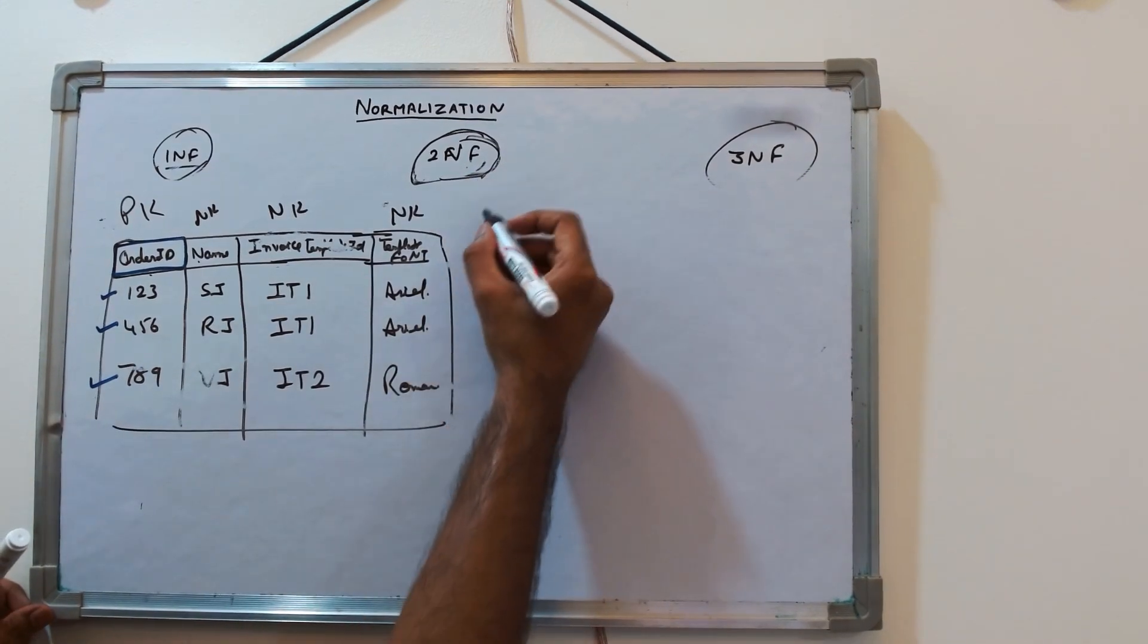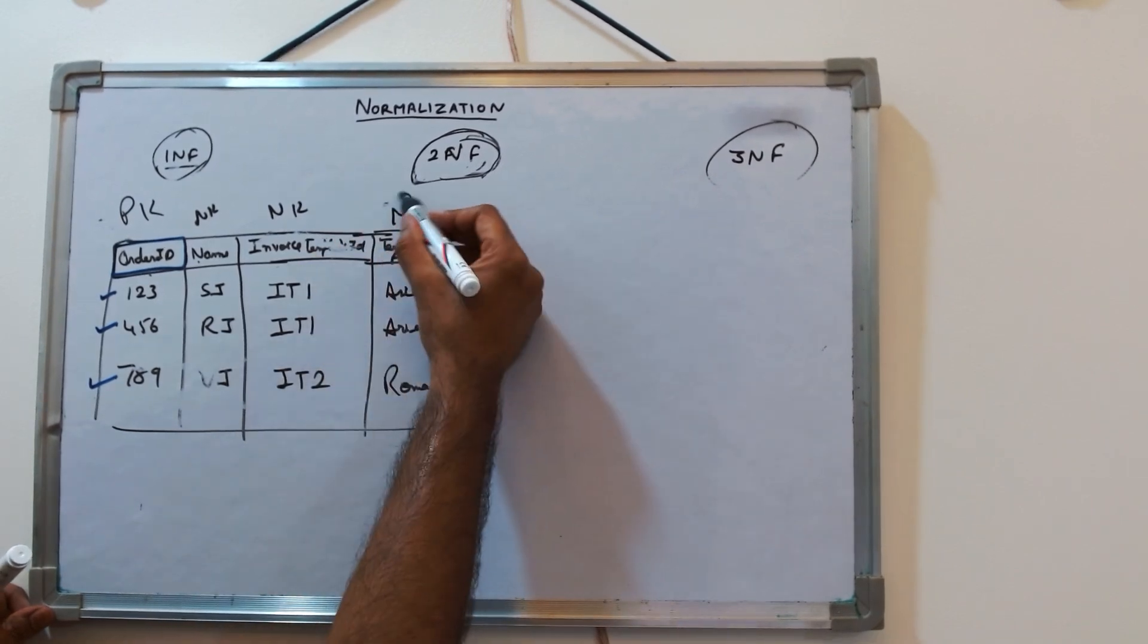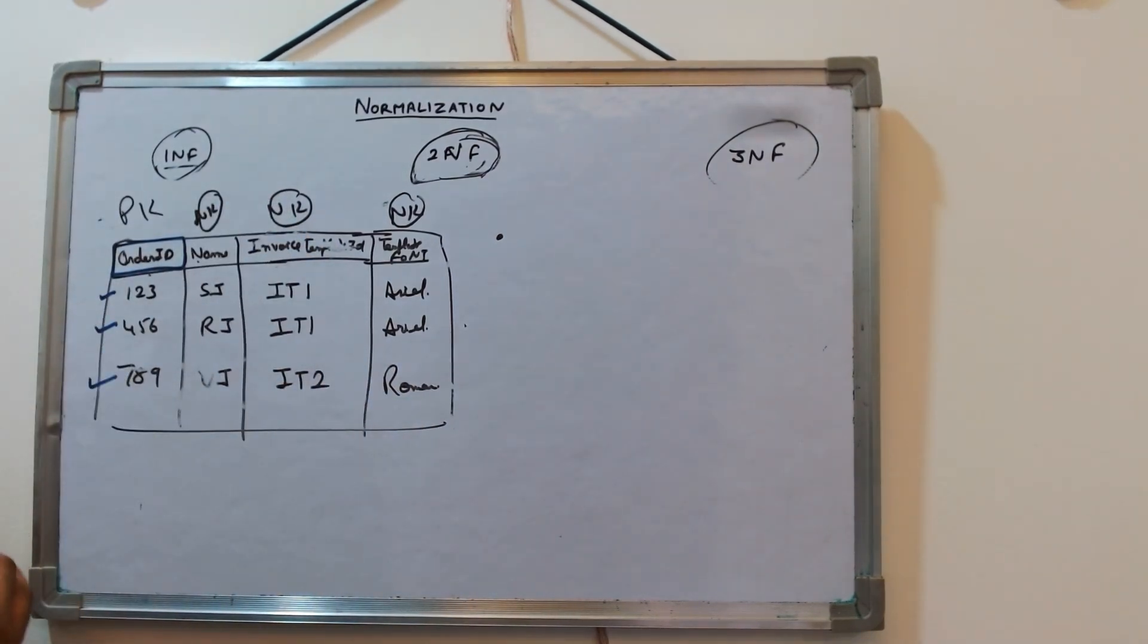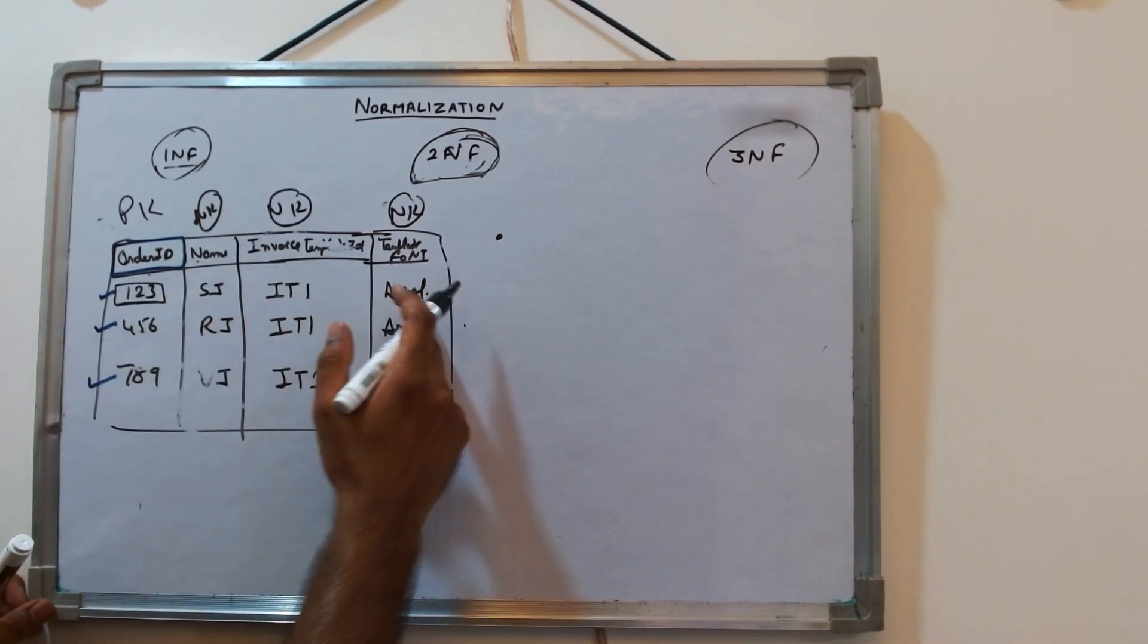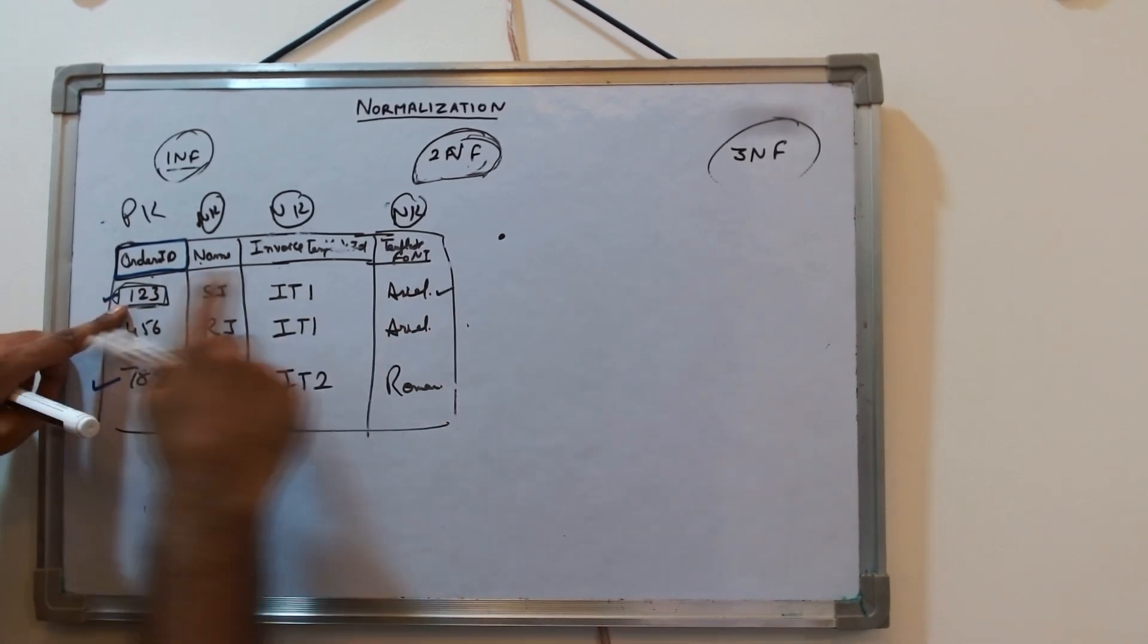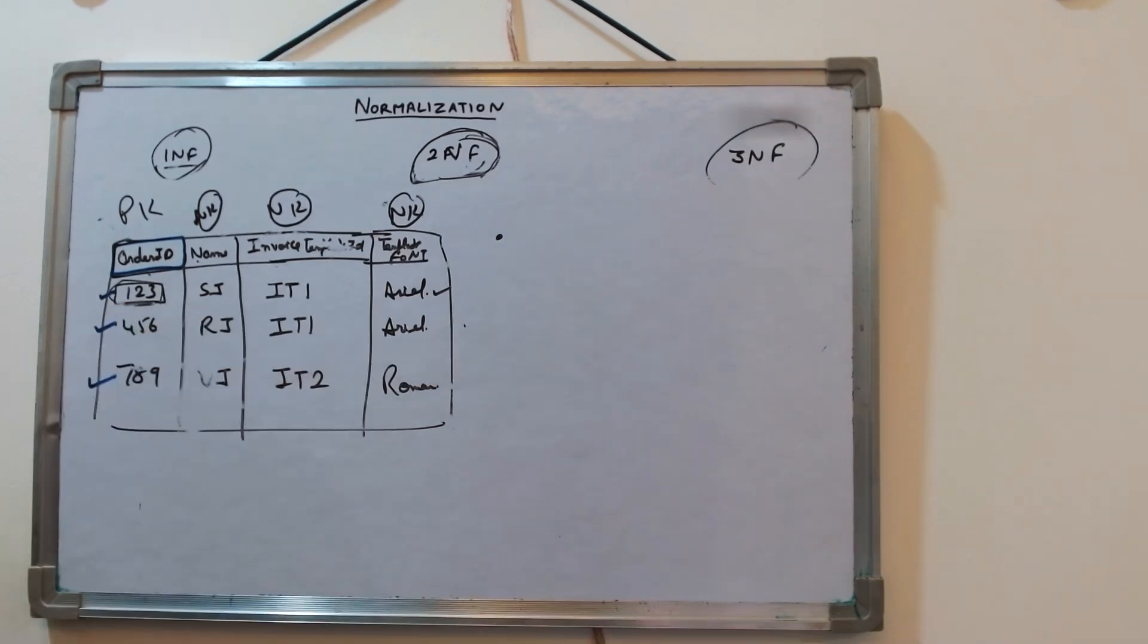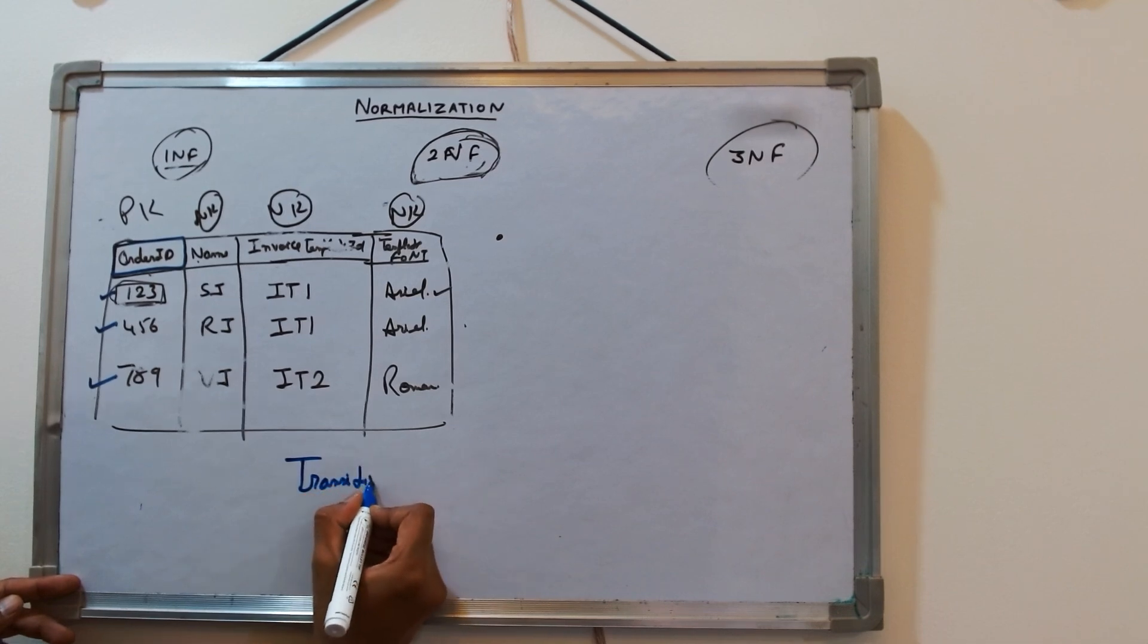So as per the 2NF, it should be in 1NF—yes it is 1NF. Second property says that all the non-key attributes should be fully functional dependent on the primary key. Means this attribute should be uniquely identified, its value. If I have this, I can compute this. If I have 1-2-3, yes I can compute this value. If I have 1-2-3, yes I can also compute what is the invoice template ID. If I have 1-2-3, I can also compute what is the name. Here if you see, the problem here is it has transitive dependency.